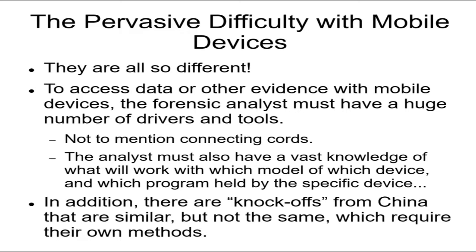This is the pervasive difficulty with all mobile device forensics: they're all different. They all require their own file system knowledge and information specific to each device. When we're given a device, we have to know what it is. Murphy's Law applies here — if you're a mobile device analyst and you know most phones, the phone you're going to be asked to analyze is the one you don't know. So you have to know a lot.